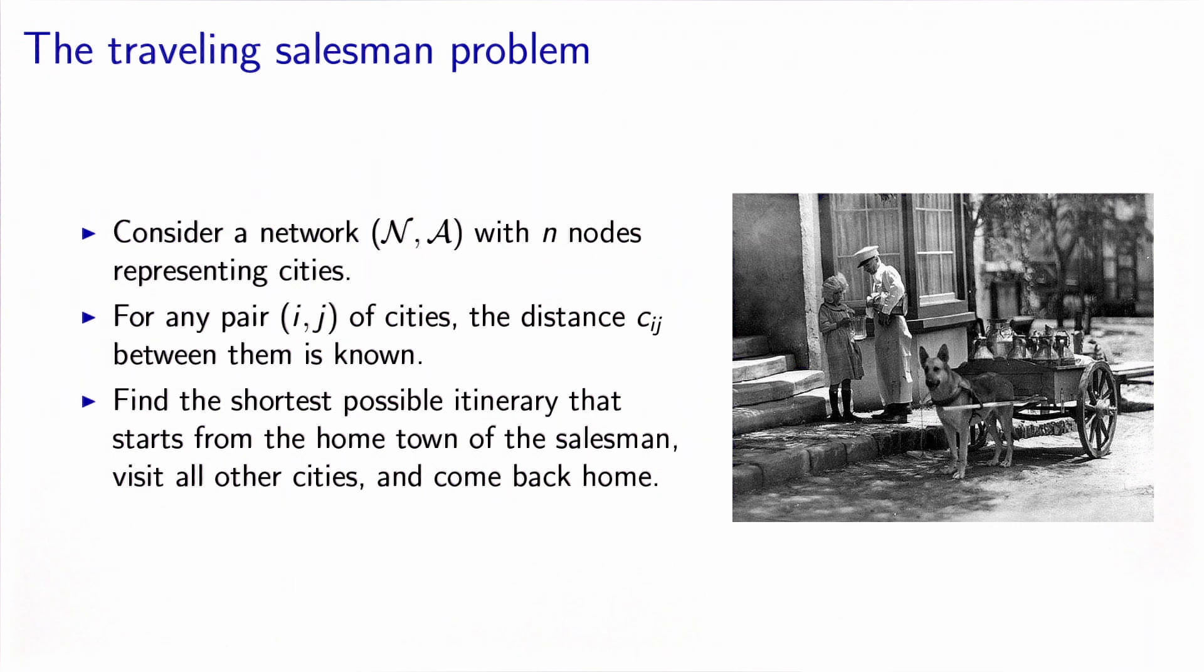Consider a network with n nodes representing cities. For any pair (i,j) of cities, we know the distance between them, cij. The problem consists in finding the shortest possible itinerary that starts from the hometown of a salesman, which is one of the nodes, visits all other cities, and comes back home.